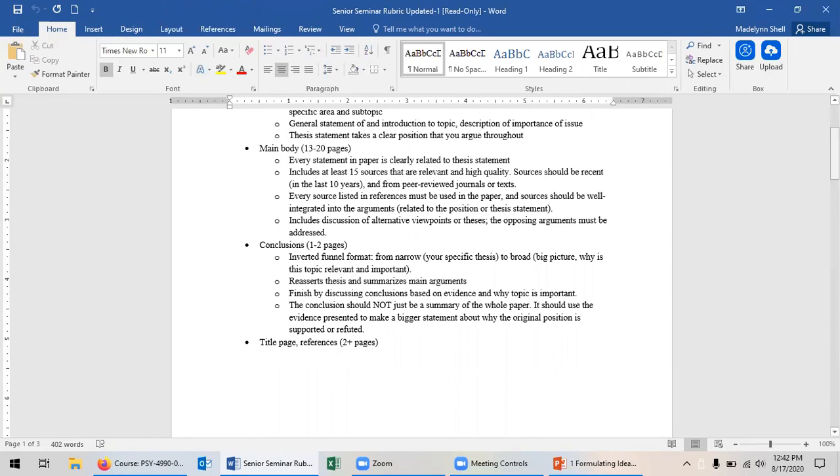These are sources that should be relatively recent within the last 10 to 15 years, ideally, but maybe not exclusively. And they should be from peer reviewed journals or texts. These are peer reviewed articles that we're looking at.